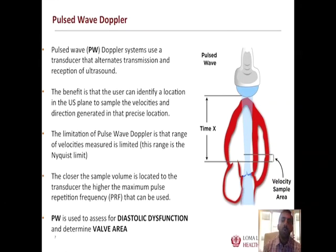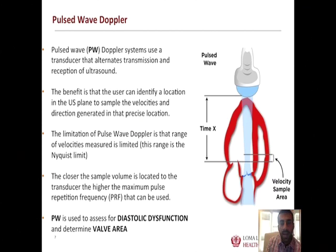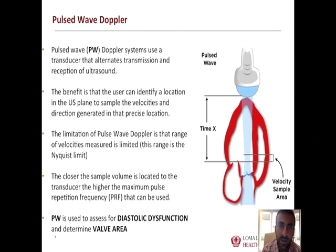Compared to continuous wave, pulse wave Doppler allows you to identify a specific velocity signal along the path. However, because you are determining the sample area to assess velocities, you are now limited on the velocity ranges that can be assessed. This is the benefit of pulse wave Doppler — a specific velocity signal — but at the cost of not having a complete range of velocities. Review the physics section for this concept along with the Nyquist limit.